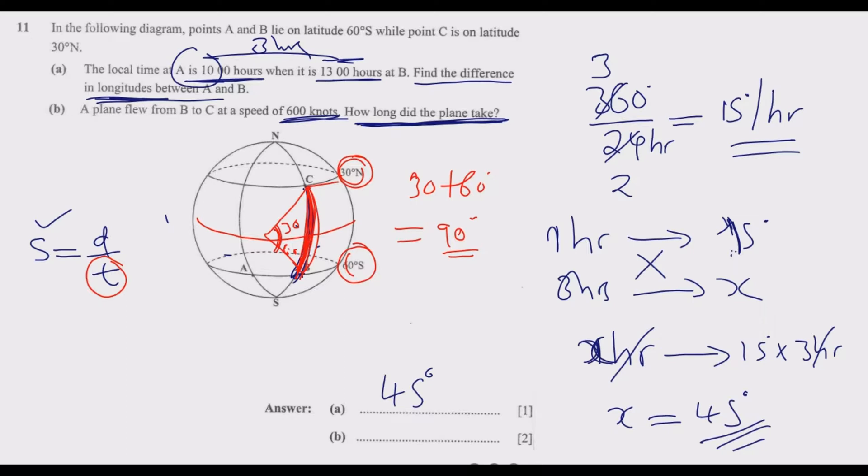To find the distance between B and C in nautical miles, you take this angle, which is 90°, and multiply by 60. So 90 × 60 equals 5400 nautical miles. For every 1° difference, it's equivalent to 60 nautical miles difference.